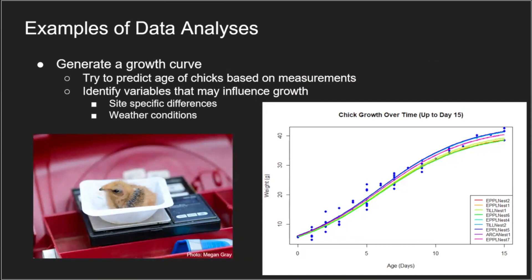The idea of measuring chicks at regular intervals through time is to generate a growth curve — looking at how measurements increase over time. If we find a nest of chicks whose age we don't know, we can go to this curve and make estimations based on measurements. For example, looking at weight over time: if we find chicks weighing about 20 grams, we can estimate they're about five days old. We can also identify different influences on their growth, such as site-specific differences or whether weather is changing their growth rates.